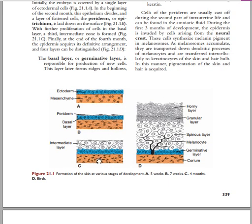At 7 weeks of gestation and 4 months of gestation, the neural crest cells grow and migrate to the basal layer of the epidermis. When they migrate to the basal layer, they develop certain processes — melanocytes — which continually help in the pigmentation of the tissue.